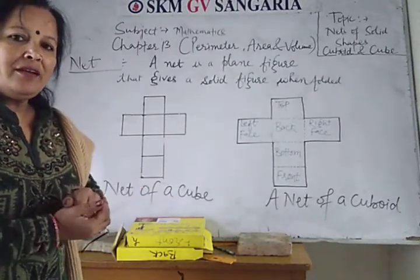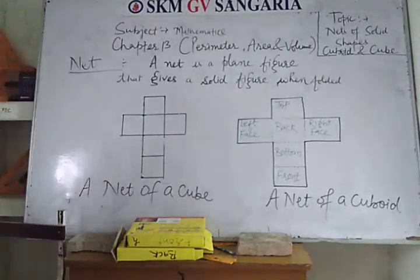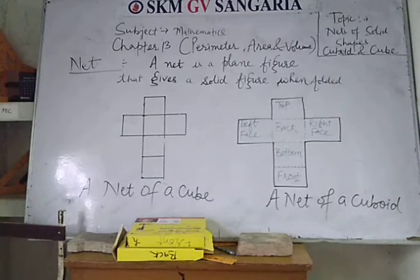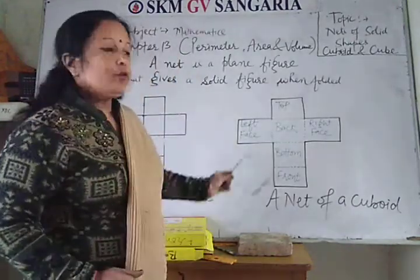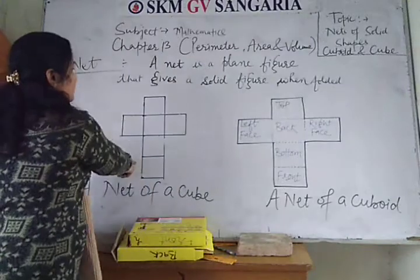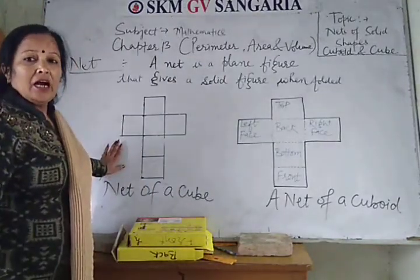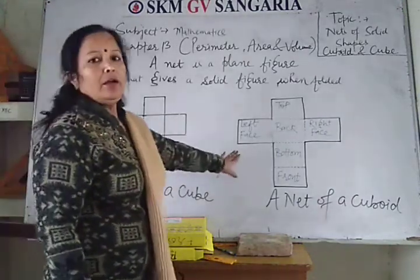You will get the solid figure which is the cube. When you fold the shape so that the six faces become the faces of the cube, and when you try this, you will find you will get a shape of a figure which is the cube.